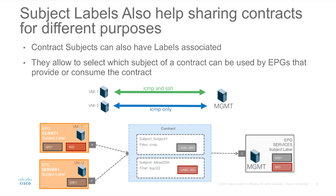As opposed to creating multiple contracts, we can create contracts with multiple subjects. Subjects can have labels associated, and these allow us to select which subjects of a contract will be used by certain EPGs to provide or consume the contract.